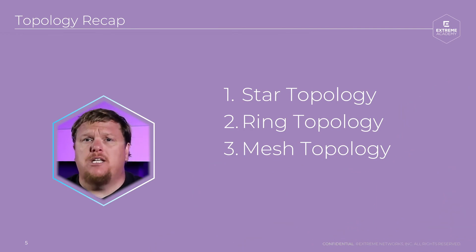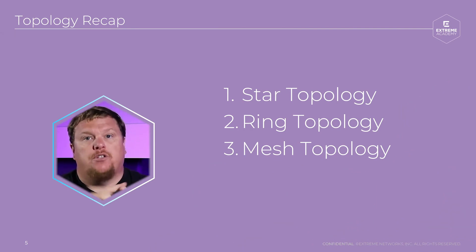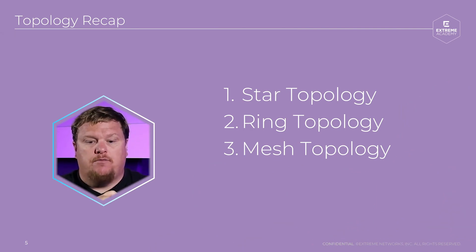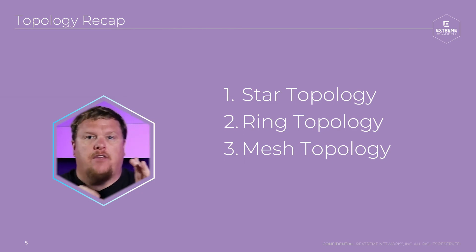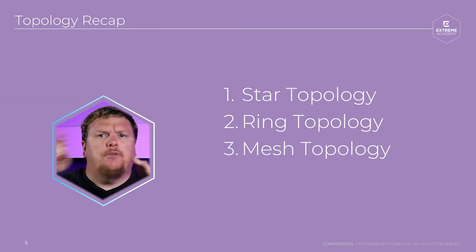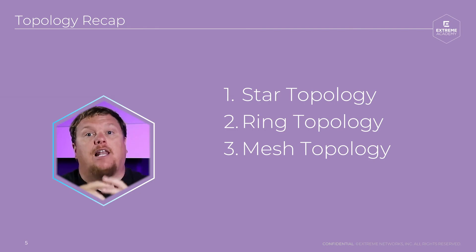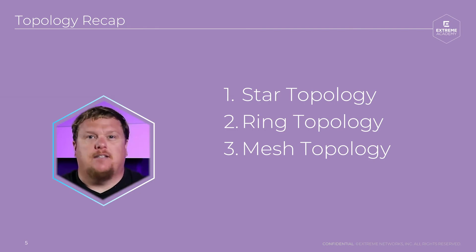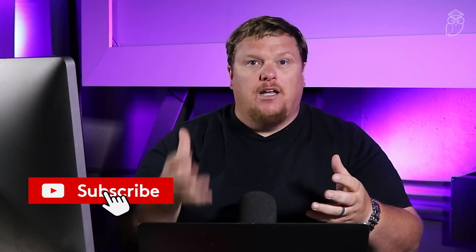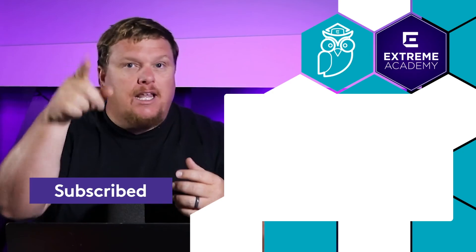So those are the three types of topologies: star, which is a central connection; ring, which is multiple devices connected together in a loop; and mesh, where the best example you've ever been on is the internet itself. Hit that subscribe button, hit that notification bell — let's keep going.